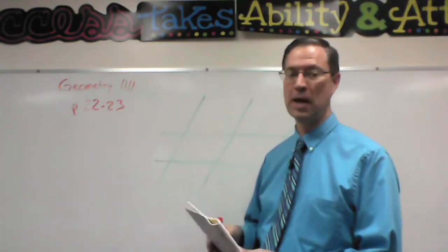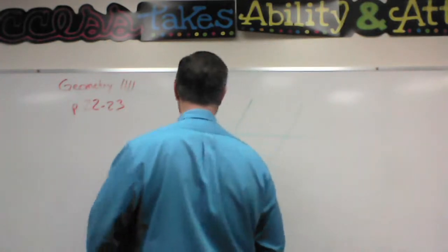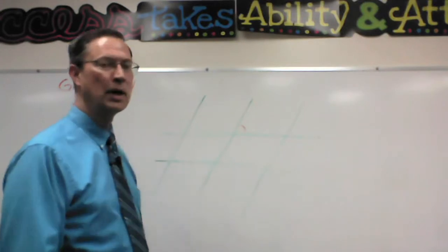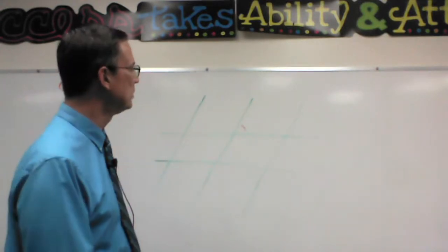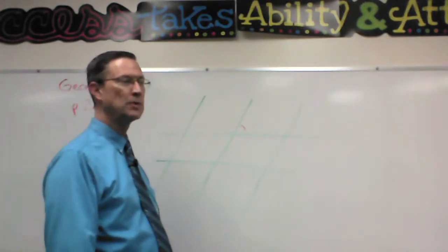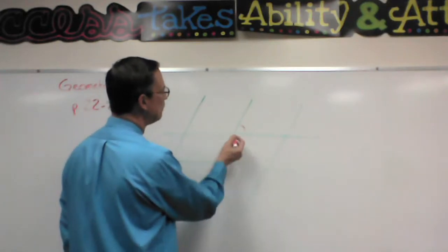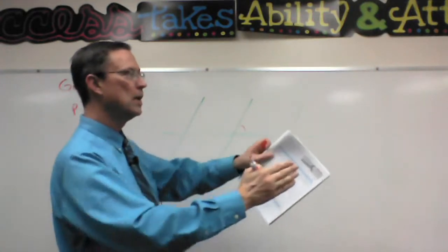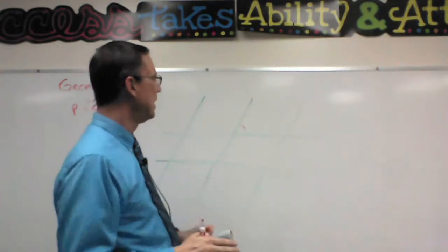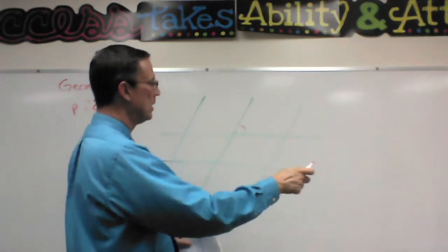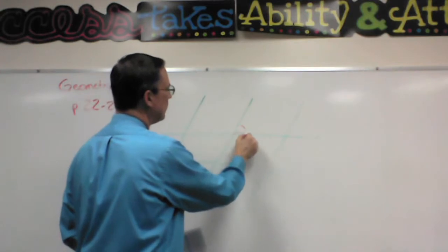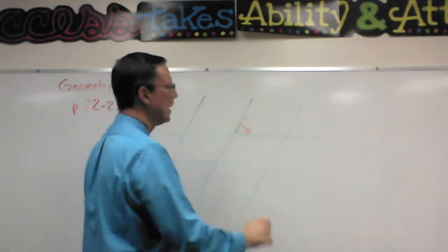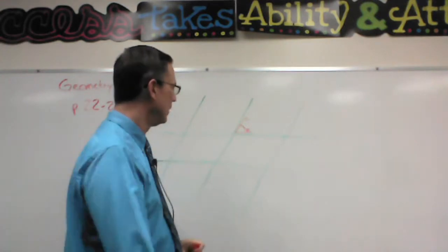So I'm going to just take a random angle right here. Let's say I'm at that angle and I'm trying to decide which is the right side and which is the left side. You have to position yourself right in the vertex looking out, and so your right hand would be on this side and your left hand would be on that side.